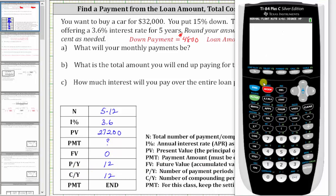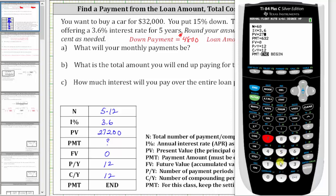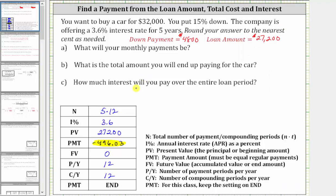Now we go to the calculator. We press Apps, Enter for Finance, Enter for TVM Solver, and enter the information. Capital N is five times 12, or 60. Interest rate is 3.6. Present value is 27,200. We are solving for payment — we'll come back to this. Future value is zero. Payments per year and compounds per year are both 12, and we leave the payment on End. We go back up to the payment cell and solve for the payment by pressing Alpha, Enter. Notice it's negative because you pay this amount each month. To the nearest cent, we have $496.03.